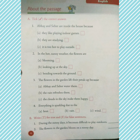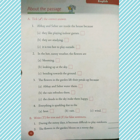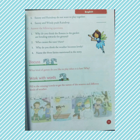Now part B: you have to write T for true and F for false sentences. The first sentence is: during the summer days, it becomes difficult to play outdoors. The answer is true — yes, it is difficult to play outdoors during sunny days. Second sentence: The flowers in the garden bloom on a sunny day. The answer is false. The flowers in the garden don't bloom on a sunny day — when it is a hot sunny day, they wilt.